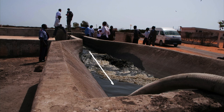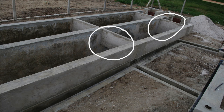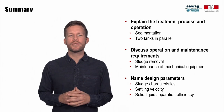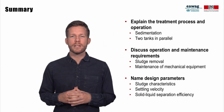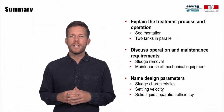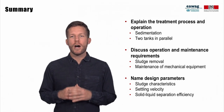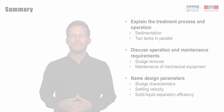A discharge area for sludge before a settling thickening tank can be a good way of mitigating turbulence. In addition, baffles at the inflow and outflow of settling thickening tanks can help reduce turbulence and ensure good solid-liquid separation efficiencies. In this module, we learned that the treatment process and operation of settling thickening tanks is based on sedimentation. Frequent removal of sludge is important so the tank operates as designed, requiring maintenance of mechanical equipment such as pumps and front loaders. Design parameters specific to settling thickening tanks are related to sludge properties and include the settling velocity and the solid-liquid separation efficiency.